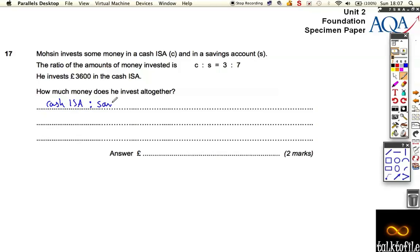The ratio of cash ISA to savings is 3 to 7. He puts £3600 into the cash ISA, and we don't know how much he puts into savings.